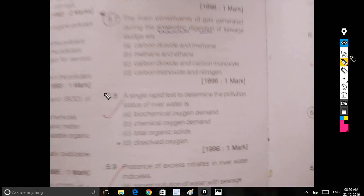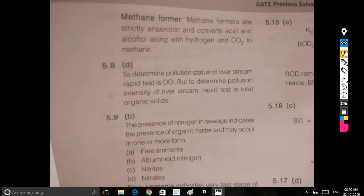The single rapid test to determine the pollution status in river water is dissolved oxygen. Very important. But to determine pollution intensity of river stream, rapid test is total organic solids. To determine pollution status, rapid test is dissolved oxygen. To determine pollution intensity, total organic solids is better.